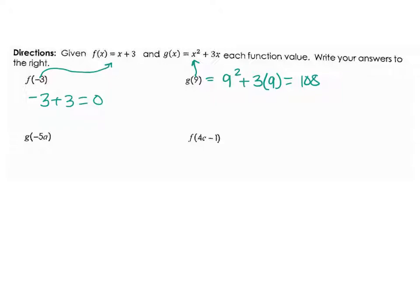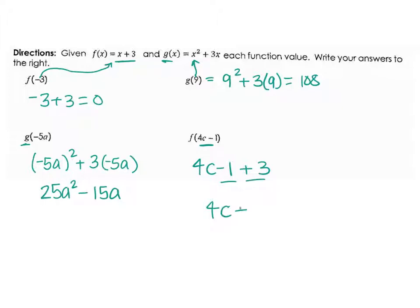And then down here with negative 5a, that's g, so you have to plug in function g. And so that's going to give me negative 5a squared, and then plus 3 times negative 5a. And when I substitute in there, I'm going to get a positive 25a² – don't forget to square the a, a lot of times people forget that – and then minus 15a. And then the last one we're subbing in 4c minus 1 into function f. So that's going to be 4c minus 1 and then plus 3. We're going to combine those two, so 4c plus 2.